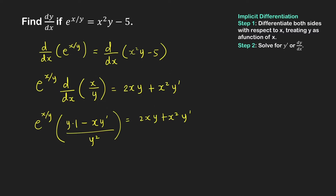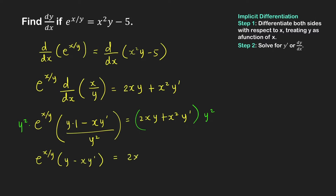Now we move to step 2 and solve for y prime. First, we multiply both sides by y squared to eliminate the denominator. After multiplying, we get e raised to x over y times y minus x times y prime, equal to 2xy cubed plus x squared y squared y prime. We can write the left-hand side as y e raised to x over y, minus x e raised to x over y times y prime, equal to the right-hand side.